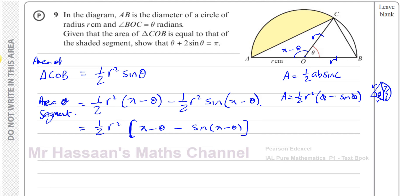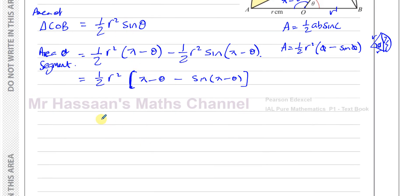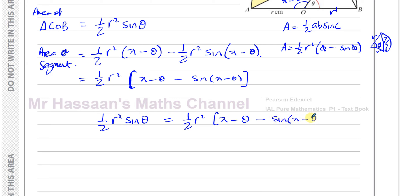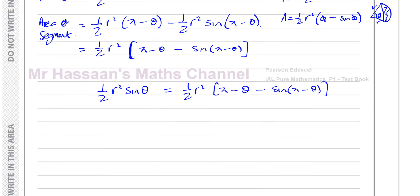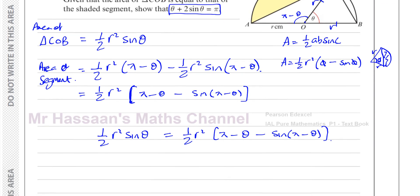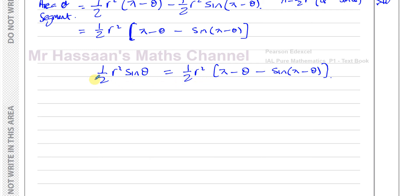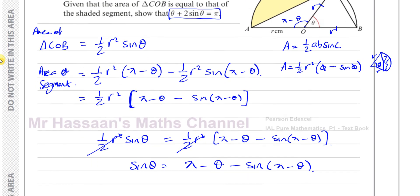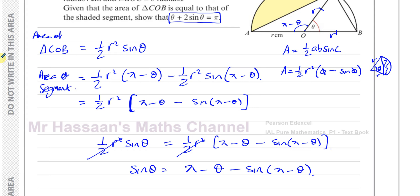We know the area of the segment equals the area of the triangle. So: half r squared sine theta equals half r squared times (pi minus theta minus sine of pi minus theta). We can divide both sides by half r squared, leaving: sine theta equals pi minus theta minus sine of pi minus theta. We need to show that theta plus 2 sine theta equals pi.